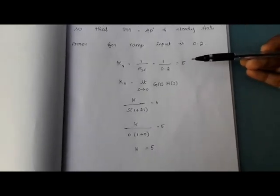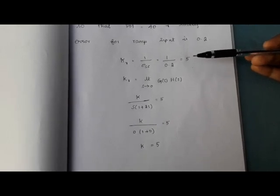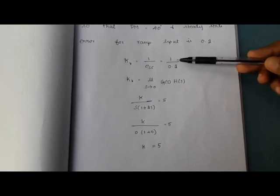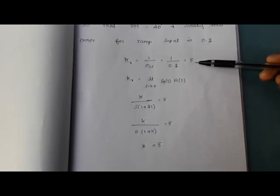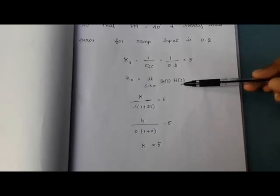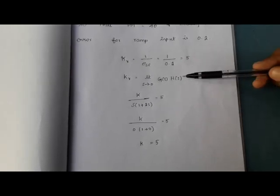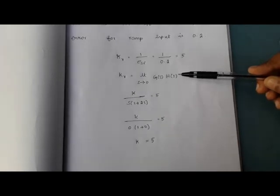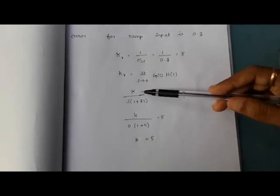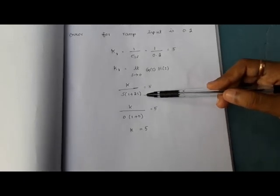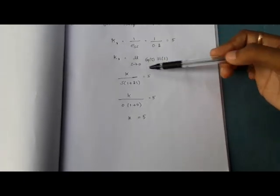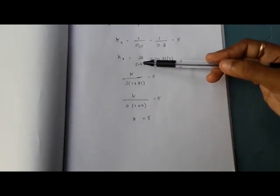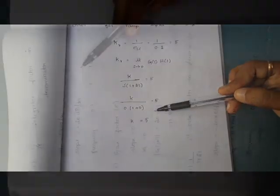First we have to find K. For that we are using Kv and ESS. Kv is equal to 1 by ESS. So ESS equals 0.2, giving 1 by 0.2 equals 5, so Kv is 5. The equation for Kv is the limit as s tends to 0 of G(s) into H(s). Here H(s) is 1 because it is unity feedback. Substituting the transfer function K by s into (1 plus 2s) and equating to Kv, with s equal to 0, we get K equal to 5.